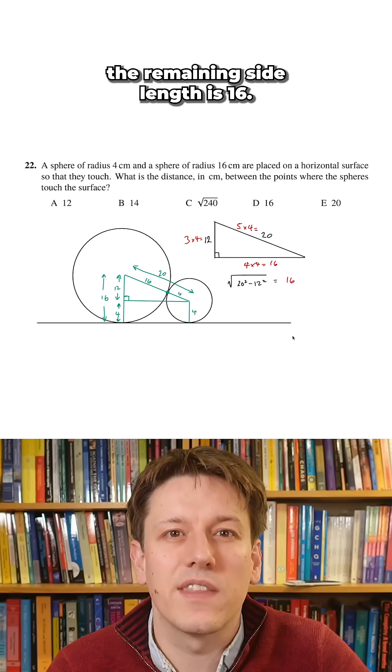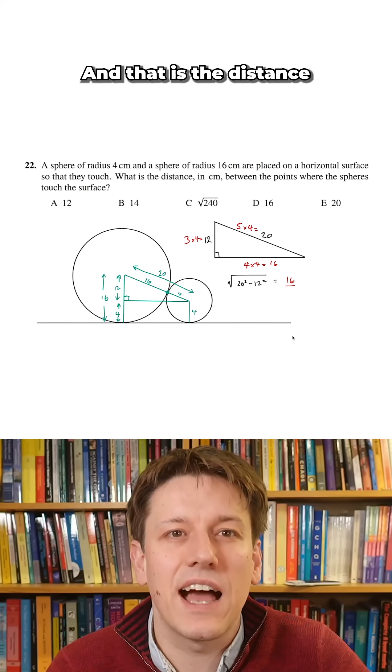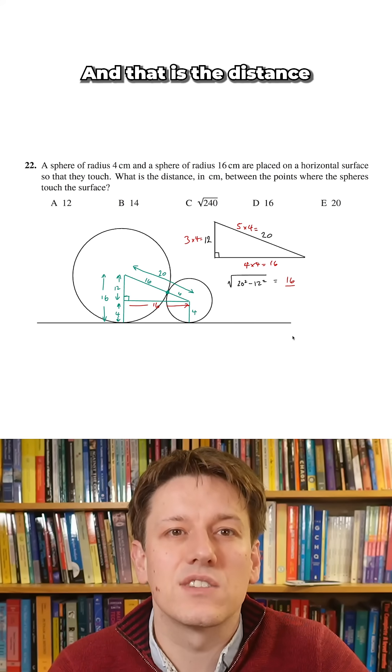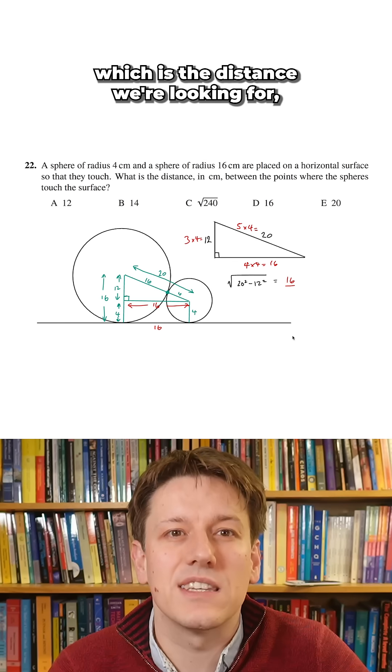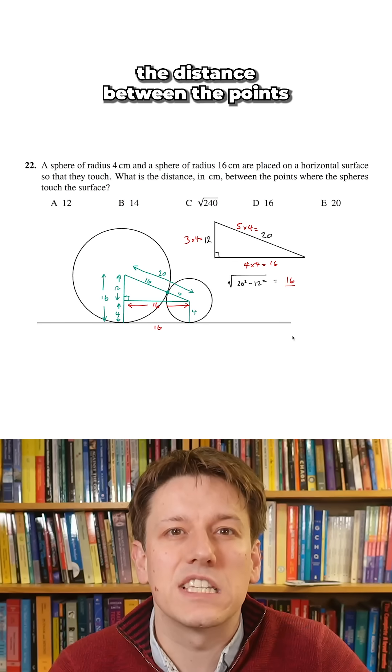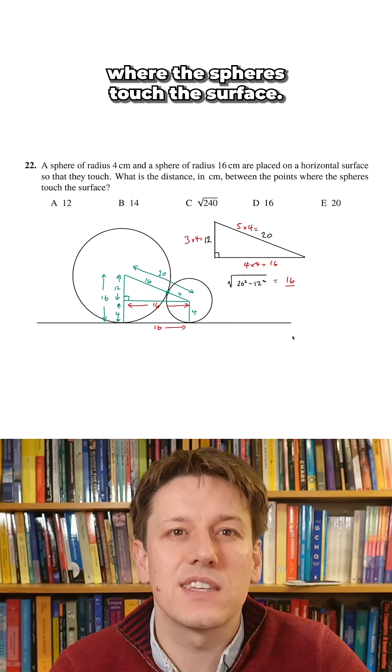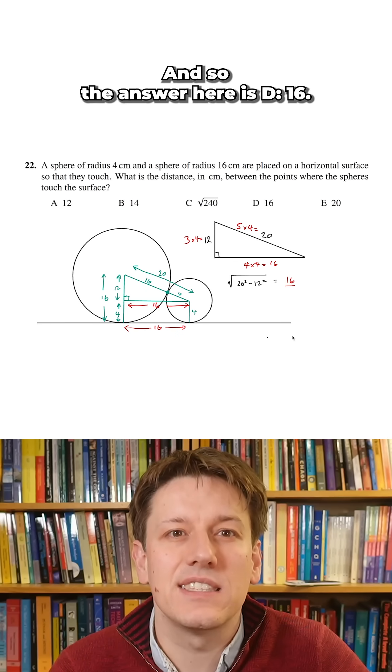So however we get it, we find that the remaining side length is 16, and that is the distance at the bottom of that triangle, which is the distance we're looking for - the distance between the points where the spheres touch the surface. So the answer here is D, 16.